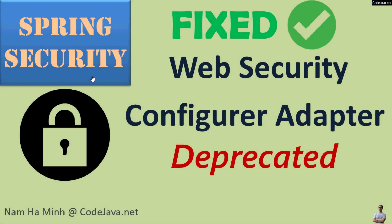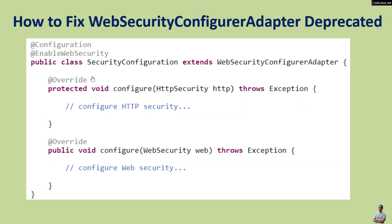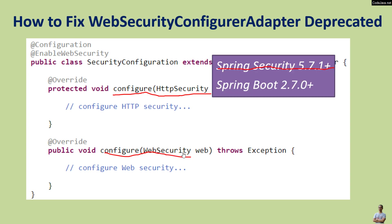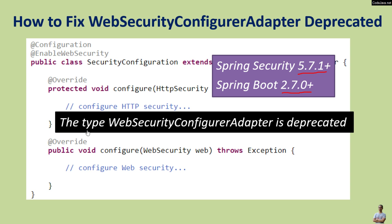In this video I'd like to share with you how to fix the warning message 'WebSecurityConfigurerAdapter deprecated' in Spring Security. Normally in a Spring Boot web application we declare a security configuration class that extends WebSecurityConfigurerAdapter and overrides its methods - configure HTTP security and configure web security. But from Spring Security version 5.7.1 or newer, or Spring Boot version 2.7.0 or newer, you will get a deprecation warning in the IDE.